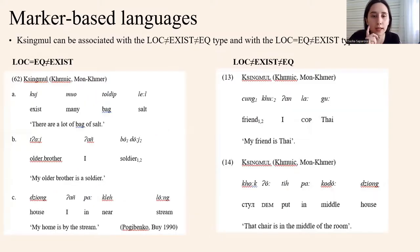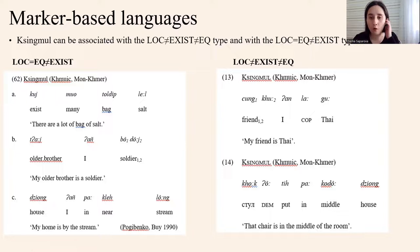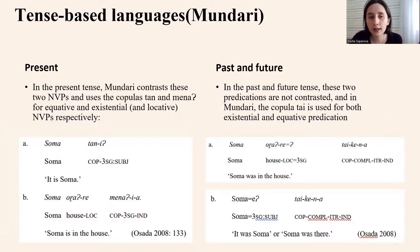One more interesting case is marker-based, mostly about Xingmu language. This language can belong to one of two types depending on the marking: Xingmu can be associated with the type where all three types of predications are marked differently, and with the type where locative and equative predications mark the same but existential is different, depending on which copula is used. The seventh type is tense-based, as already discussed with the Mundari language, where in different tenses it can belong to different types.